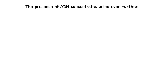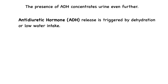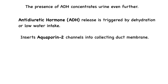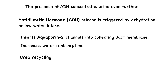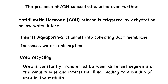When antidiuretic hormone is present — triggered by dehydration or low water intake — it acts on principal cells in the collecting duct, increasing their permeability to water. ADH does this by inserting aquaporin-2 channels into the collecting duct membrane, which increases water reabsorption, allowing the filtrate to equilibrate with the hyperosmotic medulla. Urea recycling also plays a role in concentrating urine. Urea is constantly transferred between different segments of the renal tubule and the interstitial fluid, leading to a buildup of urea in the medulla. This further reinforces the osmotic gradient, promoting water reabsorption and ensuring that a small volume of highly concentrated urine is excreted.